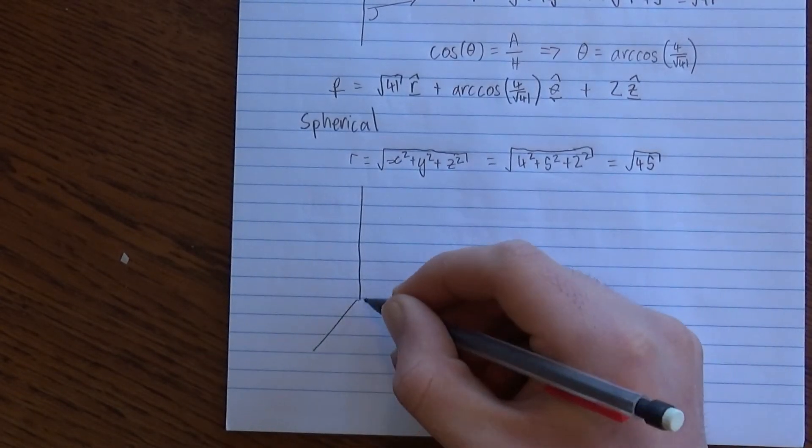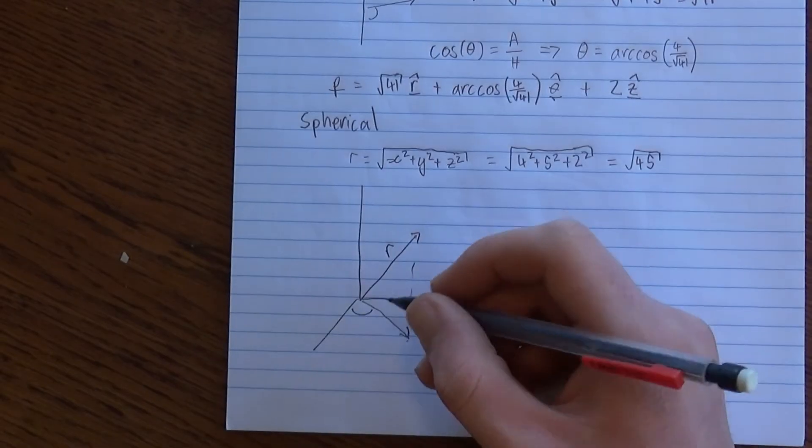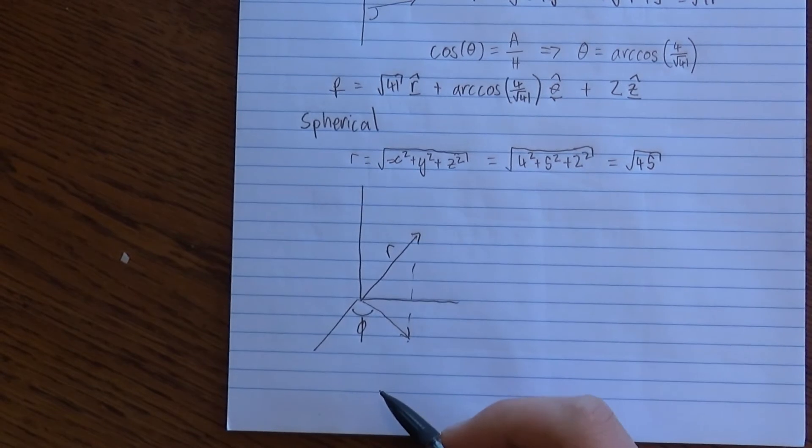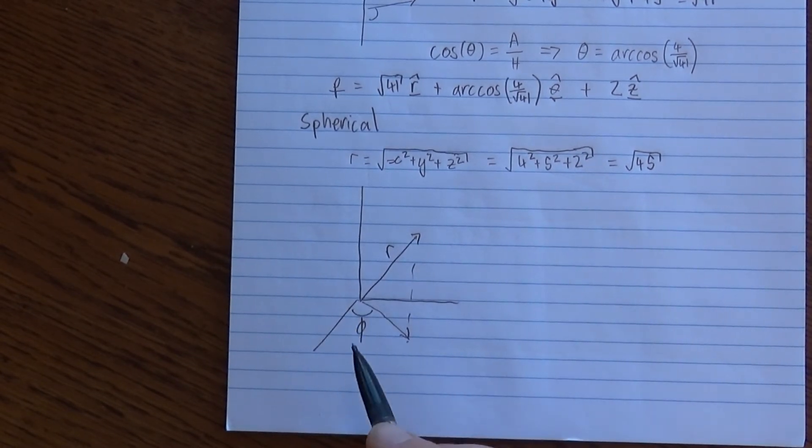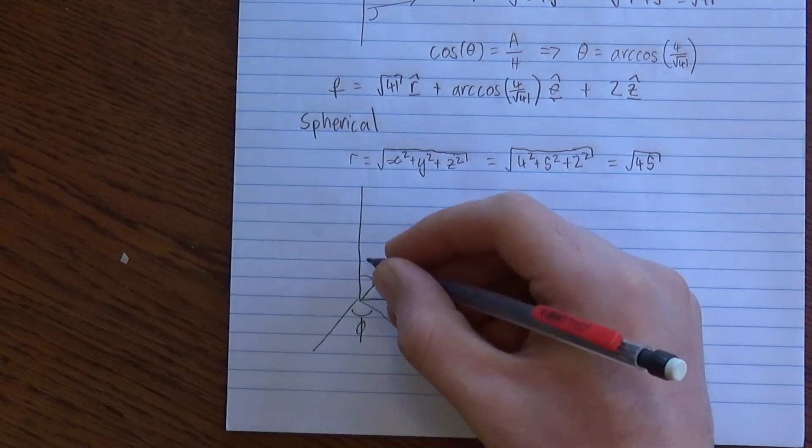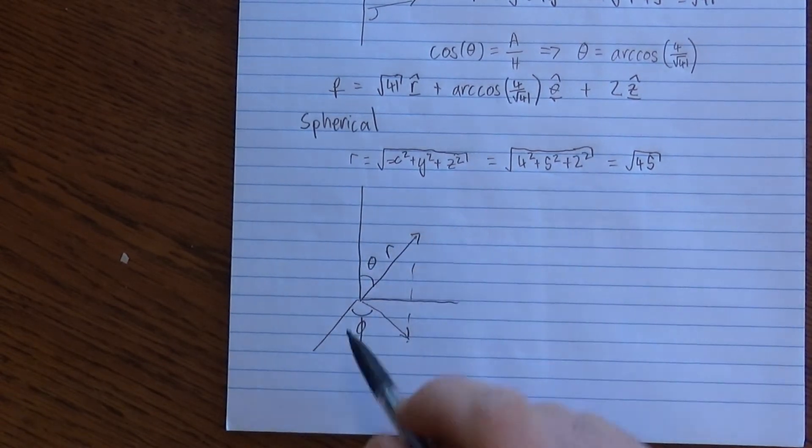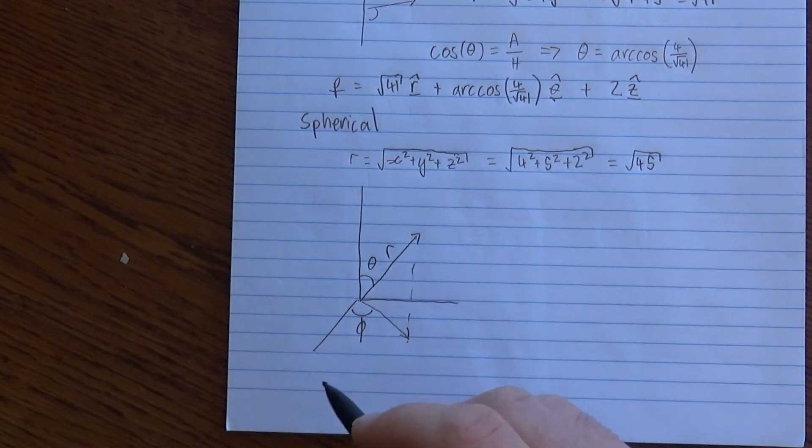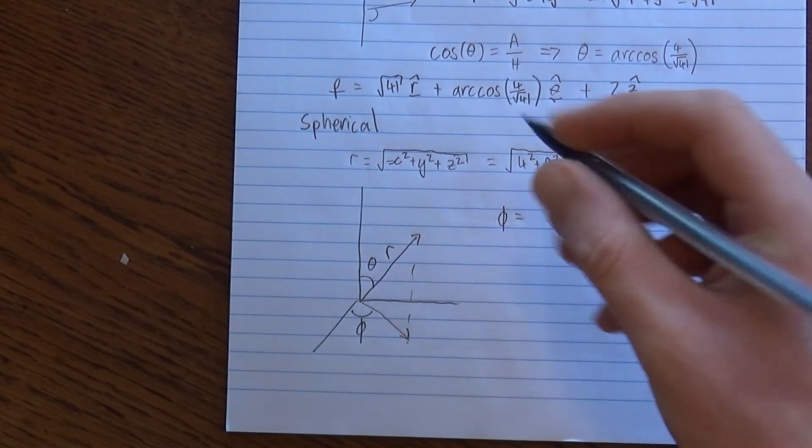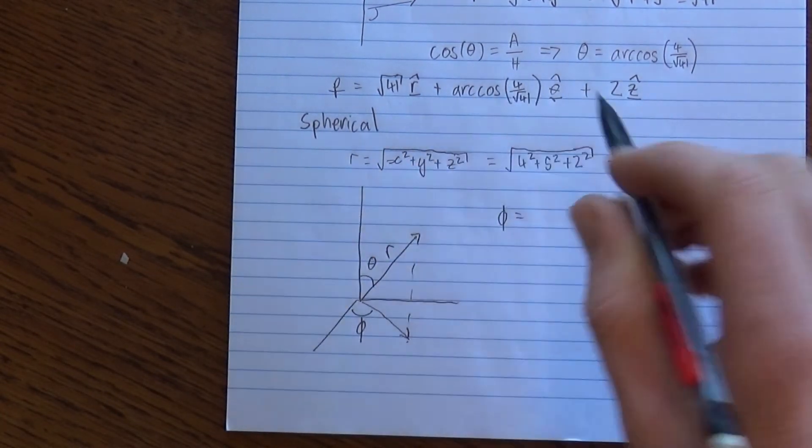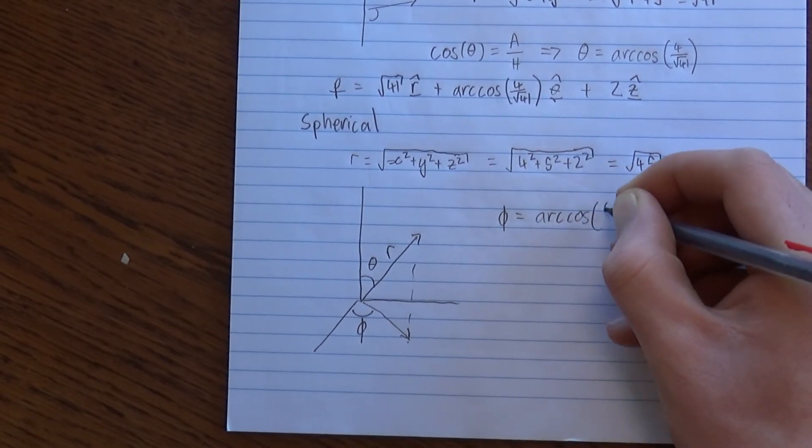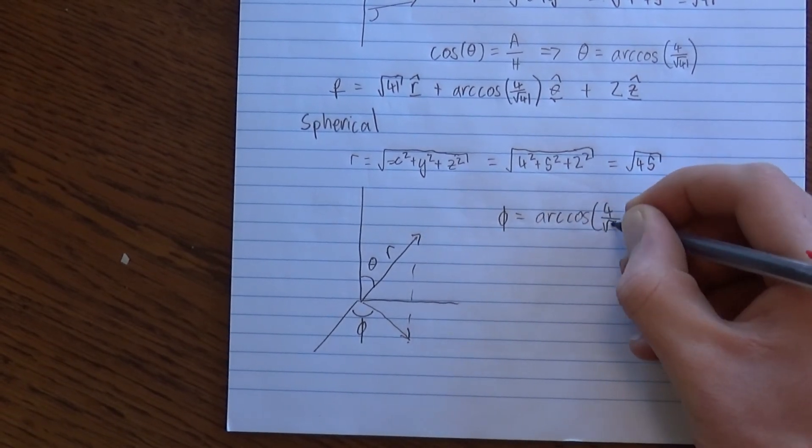And we've got spherical coordinates, that's our r. And this angle here is denoted phi by physicists and theta by mathematicians, I'm going to call it phi. This angle here is theta, although the mathematical notation is reversed from the physics notation. We have phi is equal to the same thing as theta was in the cylindrical coordinates, which is arc cos of 4 over root 41.